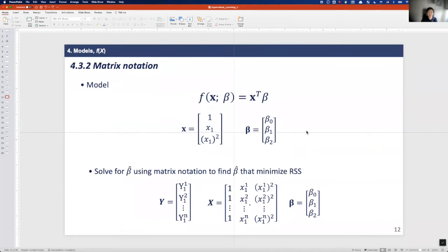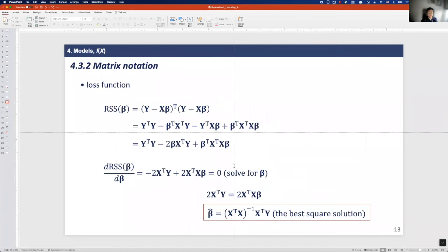Now we need to solve for beta using matrix notation to find the beta hat that minimizes the RSS. I use hat here because it indicates the estimated value of beta. Now we have simple matrix operation and derivative rules. Hopefully you still remember the matrix calculus.